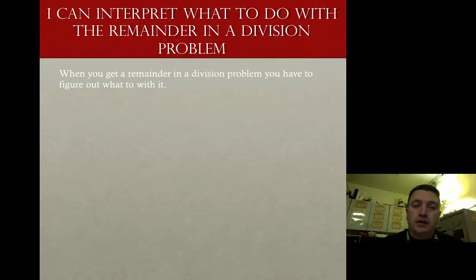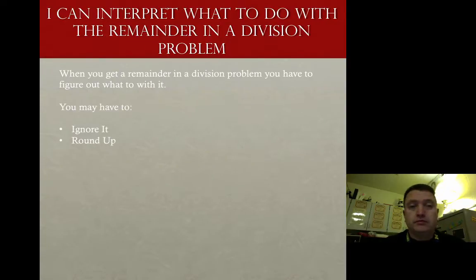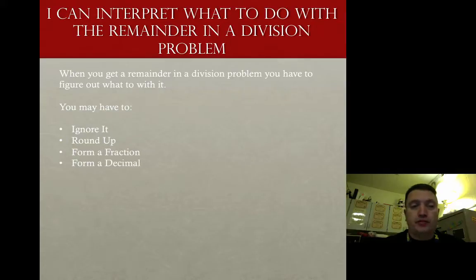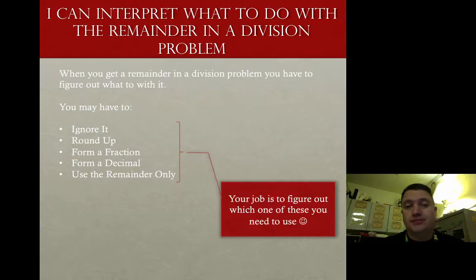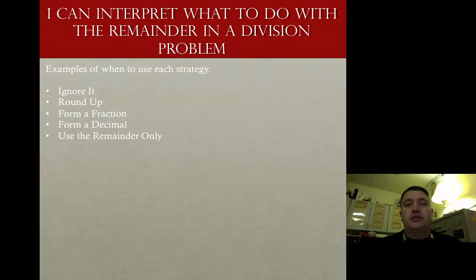When you get a remainder in a division problem, you have to figure out what to do with it. You may have to ignore it, round it up, form a fraction, form a decimal, or use the remainder only. Your job is to figure out which one of these to use. We're going to use an example of how to use each strategy as we go.